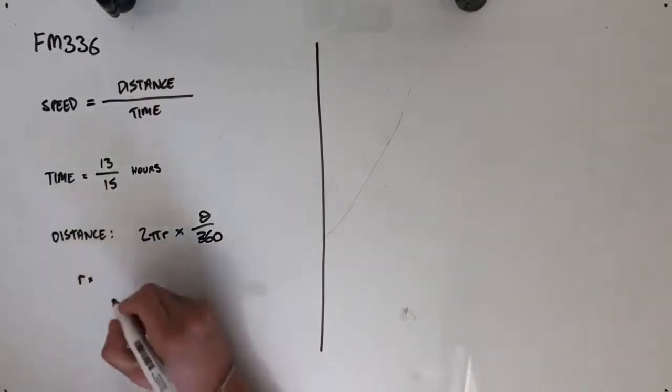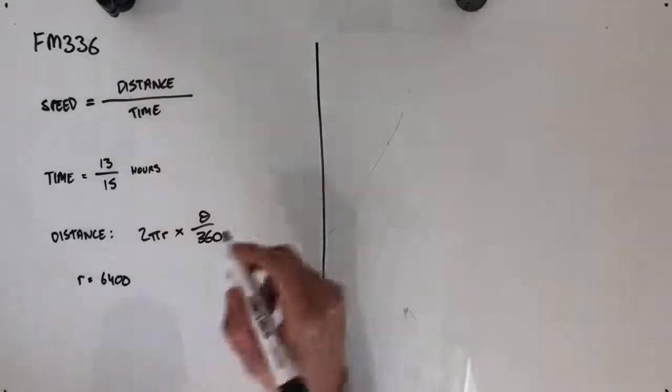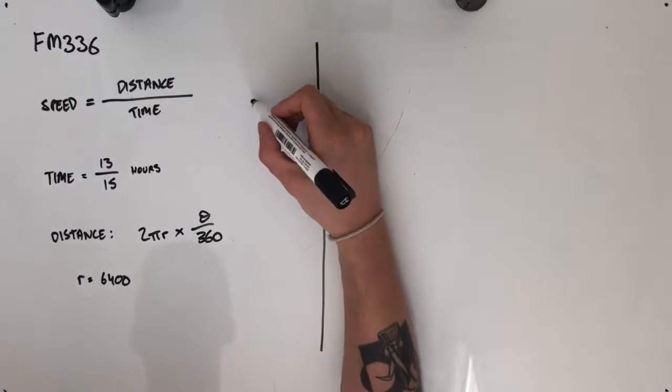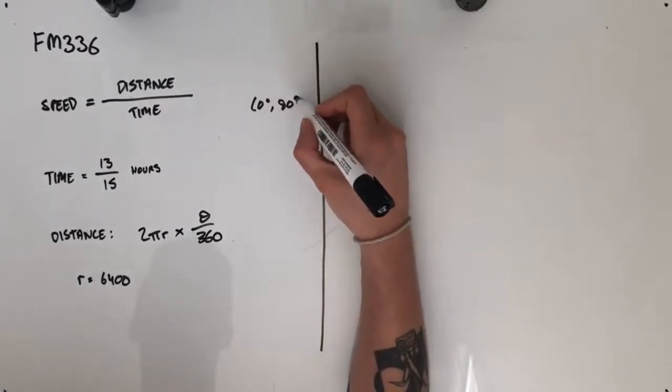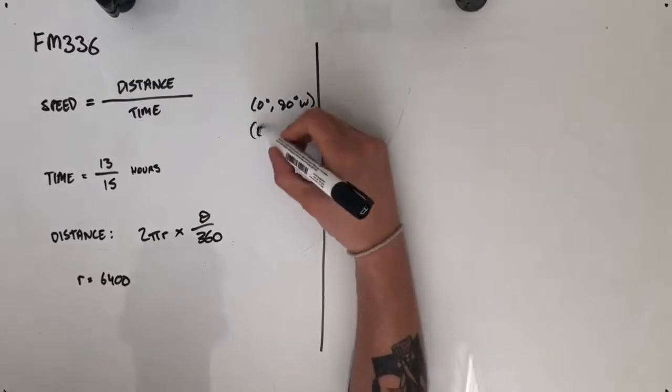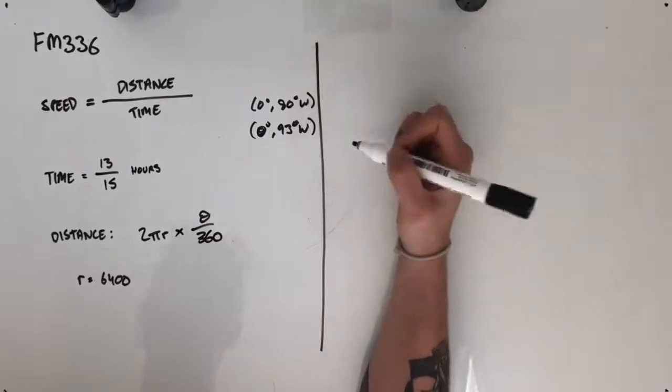our radius is going to be 6,400. We've been told to assume that the radius of the earth is 6,400 kilometres. The location of Town A is at 0 degrees, 80 degrees, and Town B is at 0 degrees, 93 degrees.